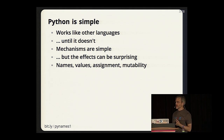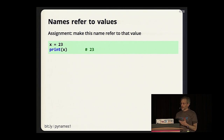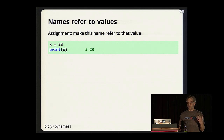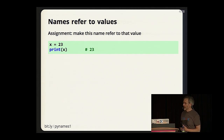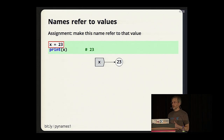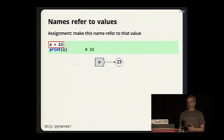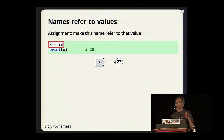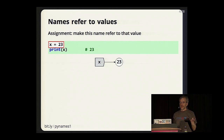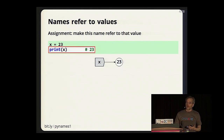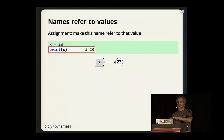The things we're going to be talking about are names, values, assignment, and mutability. The first fact is extremely simple: names refer to values. The way variables work in Python is that they are a name that refers to a value. Assignment simply makes the name refer to that value. When we execute `x = 23`, the 23 is an integer object and x is the name pointing to it. When you use the name x, Python finds the value it refers to and uses it—so `print x` prints 23.